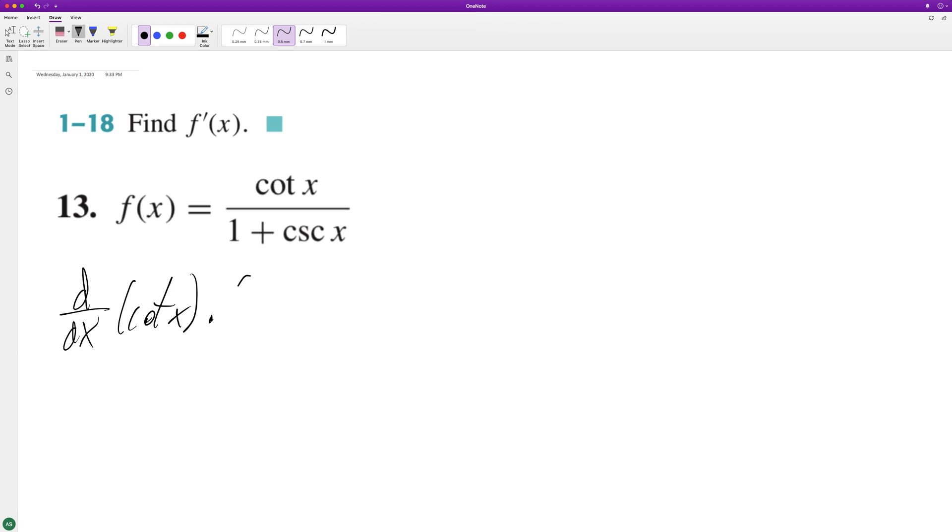And that's the whole quantity one plus cosecant of x, minus cotangent of x times the derivative of the denominator, one plus cosecant of x, and then the denominator squared.